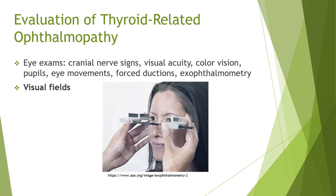For thyroid-related ophthalmopathy specifically, important eye exams include cranial nerve assessment — extraocular movement in all cardinal positions as well as tracking for pupils. Visual acuity is always important to check, as is color vision to rule out dyschromatopsia. Forced ductions and exophthalmometry are used to ascertain if there is any proptosis. Visual fields can also be diminished in TRO, assessed by confrontational fields sitting in front of the patient. More information can be found in our ophthalmic physical exam videos.